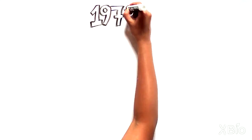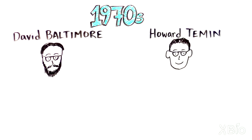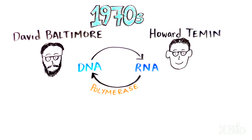Back in the early 1970s, David Baltimore and Howard Temin hypothesized that retroviruses might have a special kind of enzyme, a polymerase, that could turn their RNA into DNA.